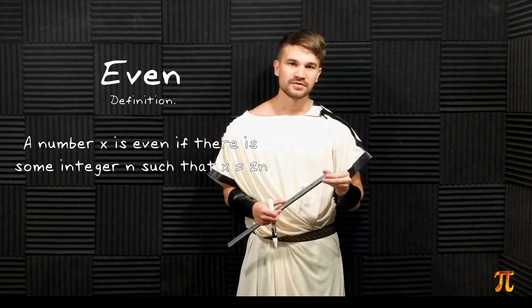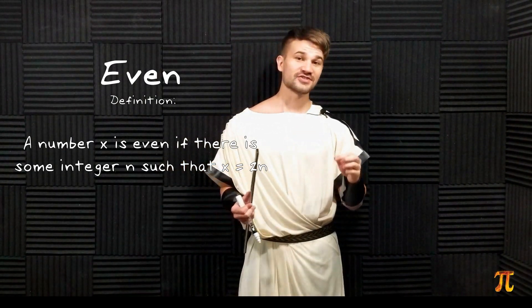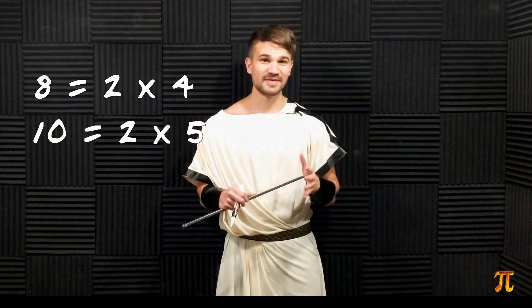But we need a nice working definition, so instead of saying that an even number is a number that is divisible by two, let's say that an even number is two times some other number. So we'll say that an integer x is even if there exists an integer n such that x is equal to 2n. For example, 8 is even because it is 4 times 2, 10 is even because it is 5 times 2, 38 is even because it is 2 times something.